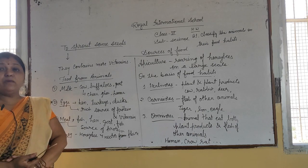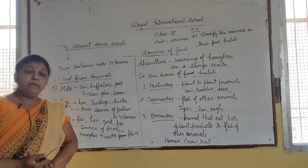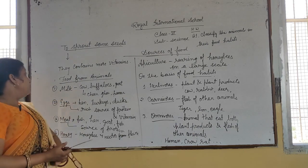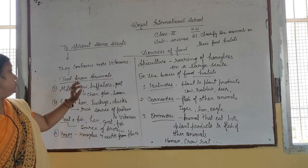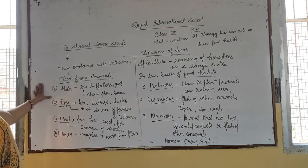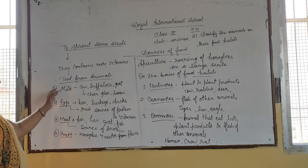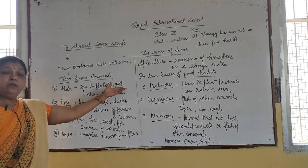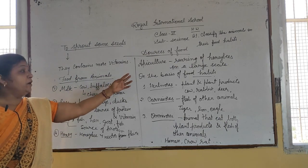Animals also give us food. First of all comes milk. The animals that give us milk are cow, buffalo, and goat. There are many such animals.